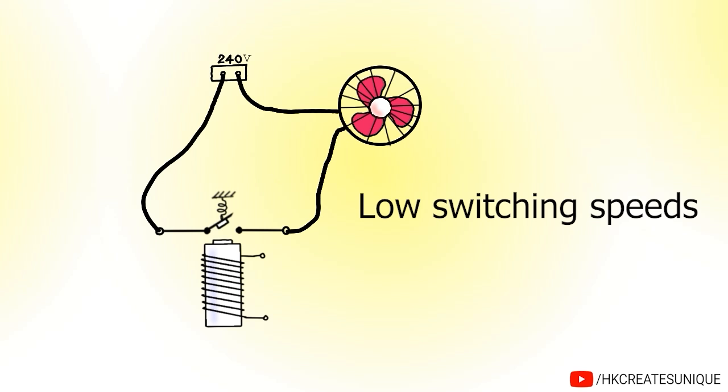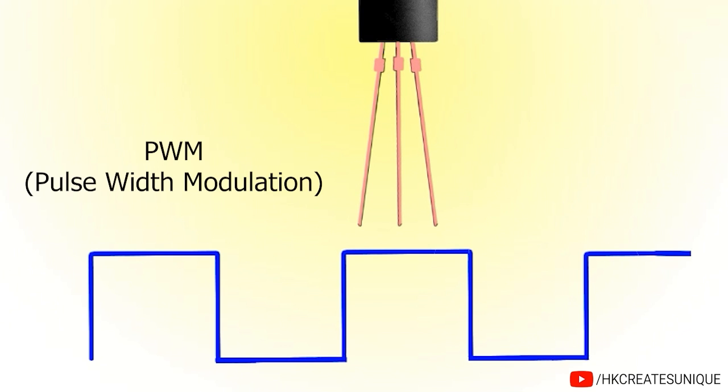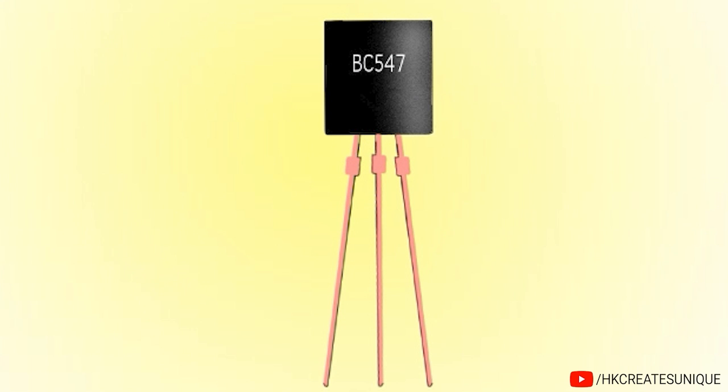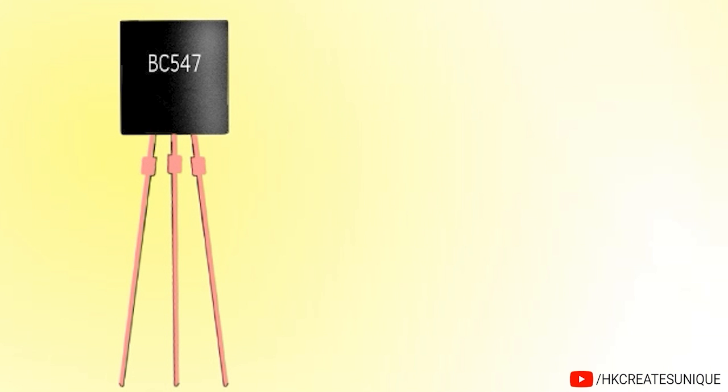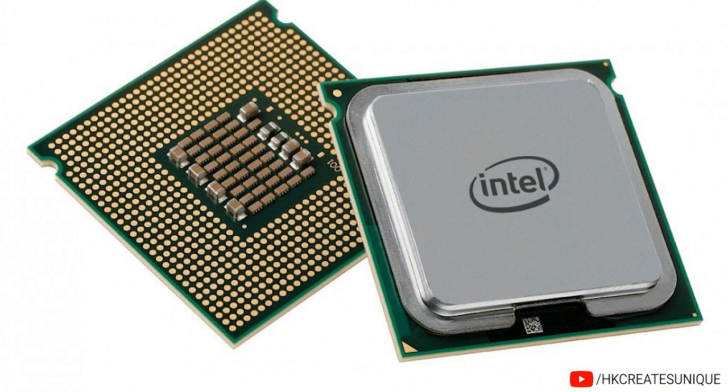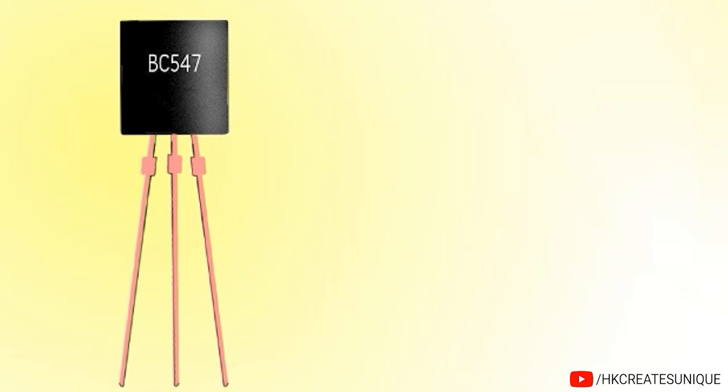Although a relay can drive high current loads, they have low switching speeds. A transistor on the other hand can handle high switching frequencies from a few kilohertz to megahertz depending on the type of transistor being used. That's why it can be used in PWM signal applications, in logic gates, and in many other applications. A transistor has much longer life span because it has no moving parts. A transistor can get much smaller in size in comparison to a relay. That's why a processor can fit billions of transistors in it. A transistor consumes very small amount of power.